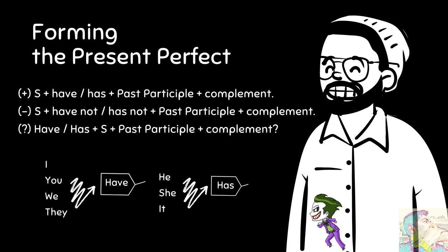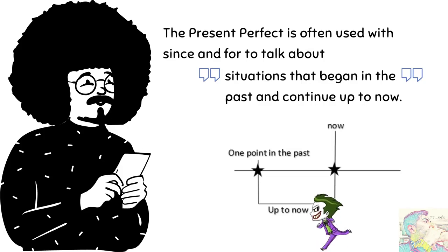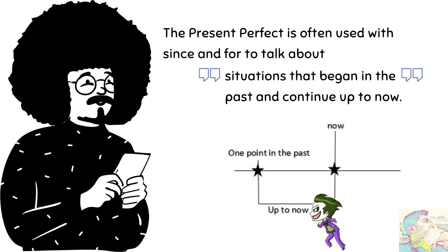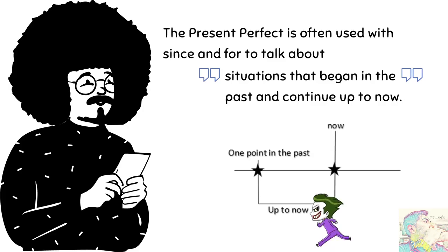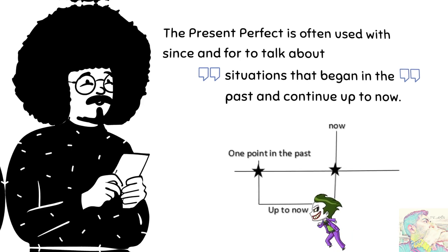Present perfect is only used with 'since' and 'for' to talk about situations that began in the past and continue up to now. Dimulai di masa lampau, nyambung atau berlangsung sampai sekarang. Kalian bisa lihat grafiknya: one point in the past up to now, ada 'now' di sana. Biasanya present perfect juga menggunakan keterangan waktu dengan kata since dan for.